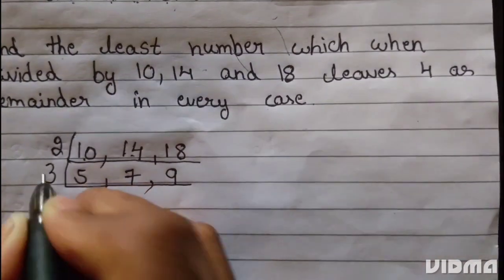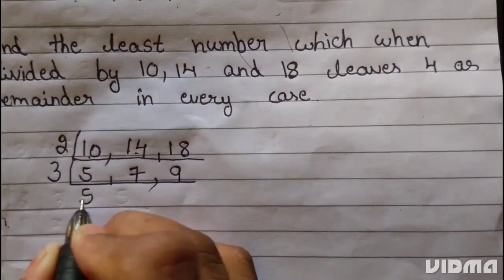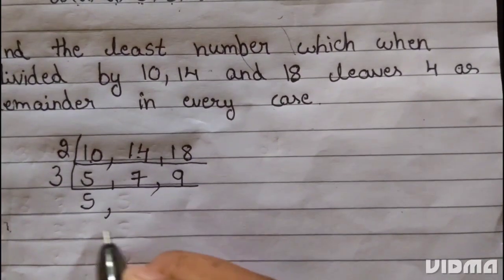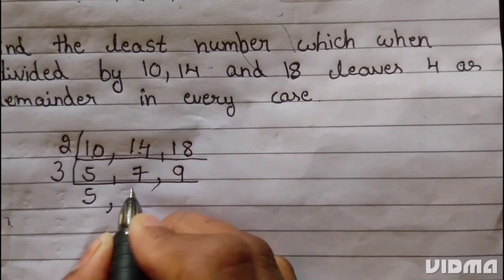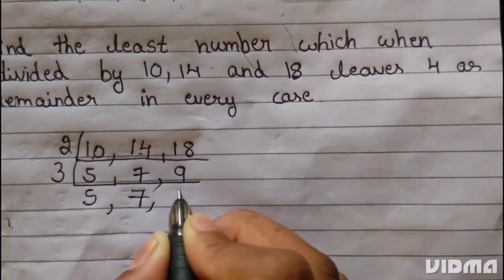3 divides 9. 5 is not divisible by 3 so we write 5, 7 remains 7, 3 into 9 gives 3.